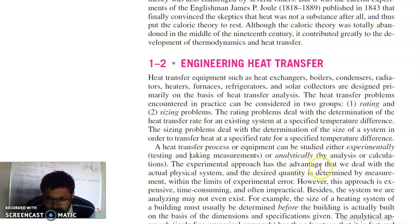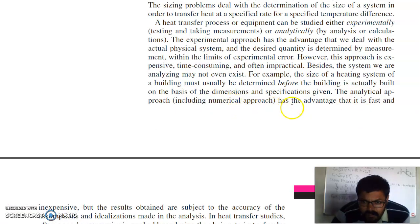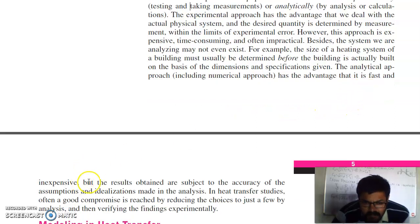A heat transfer process or equipment can be studied either experimentally or analytically. The experimental approach has the advantage that we deal with the actual physical system and the desired quantity is determined by measurement within the limits of experimental error. However, for designing a building's heating system, for example, it is better to use an analytical approach, which is fast and inexpensive, though results are subject to the accuracy of the assumptions and idealizations made in the analysis. Often a good compromise is reached by reducing the choices to just a few analyses and then verifying the findings experimentally.